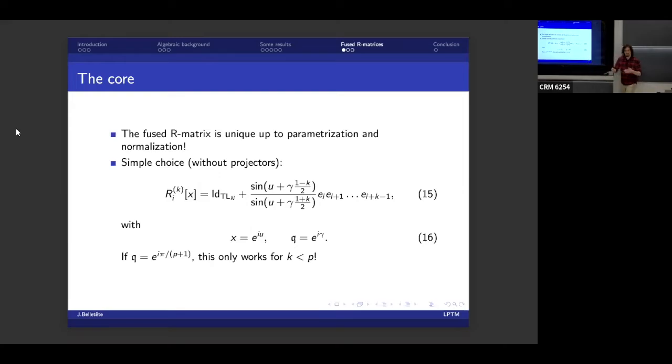Now, there are many ways of choosing this R matrix that look different, but aren't. And the simplest one is probably this one. I didn't put the projectors. So you have to imagine that there are projectors on each side of this guy. But it's very simple. It's the identity plus the ratio of trigonometric functions times the long string of Temperley-Lieb generators. E_i, E_{i+1}, all the way to E_{i+k}.